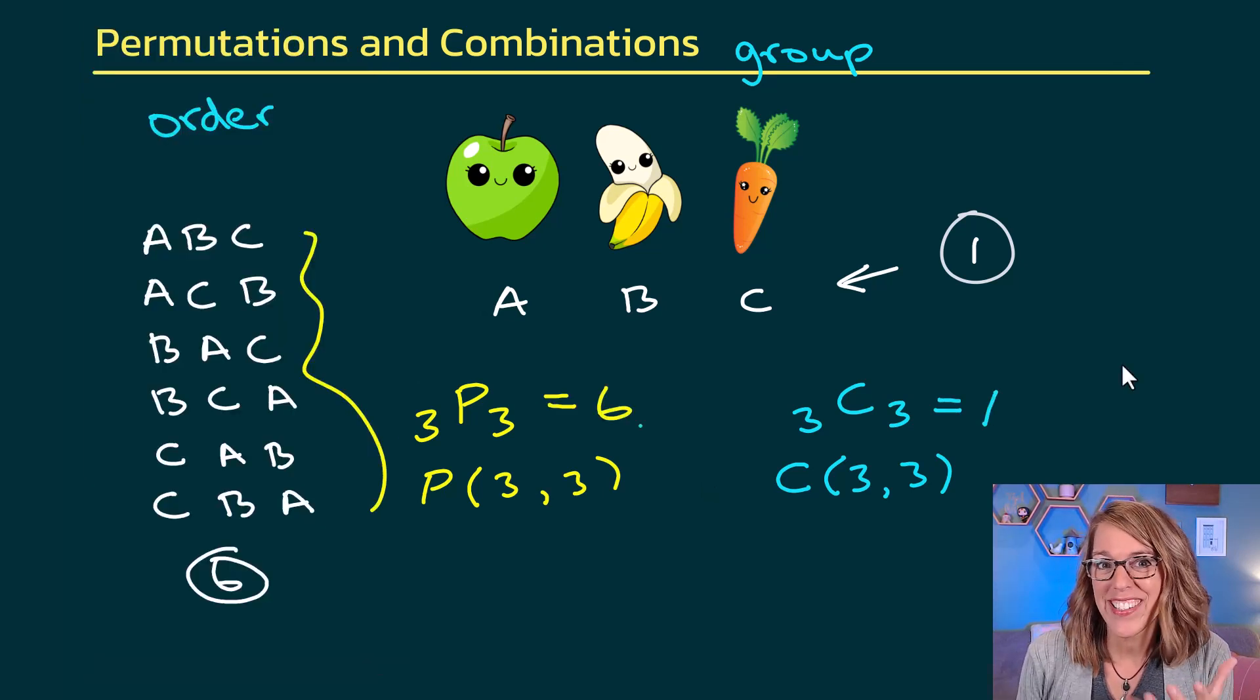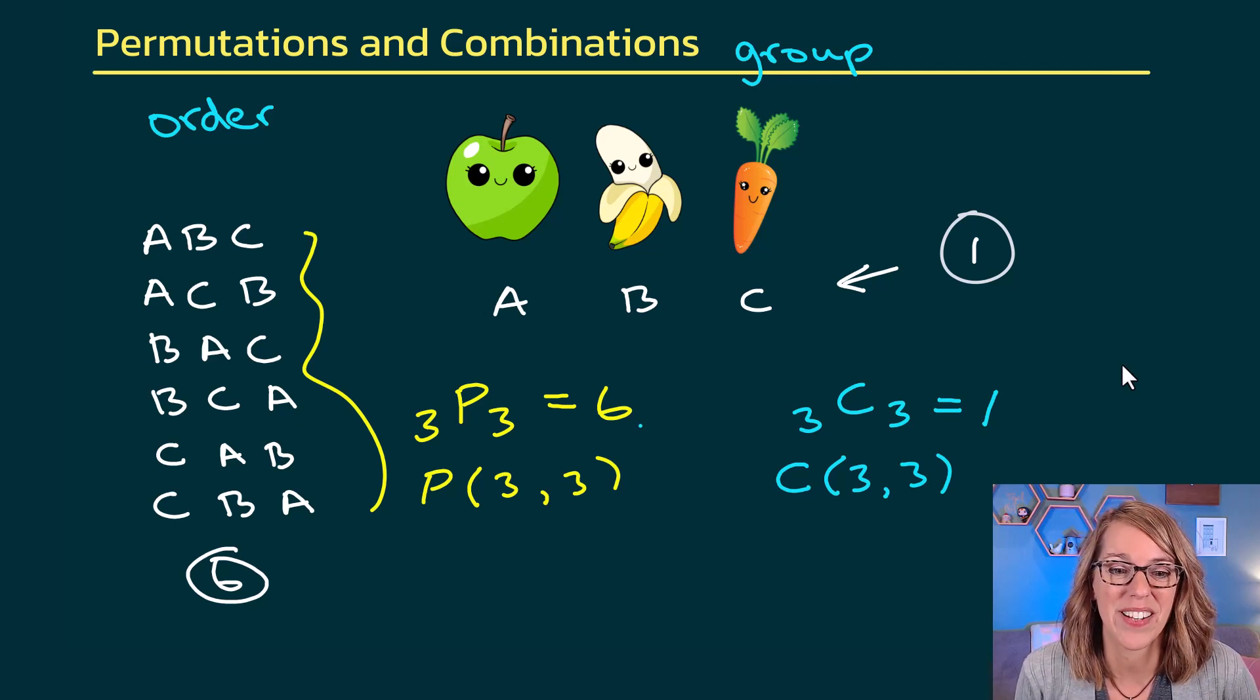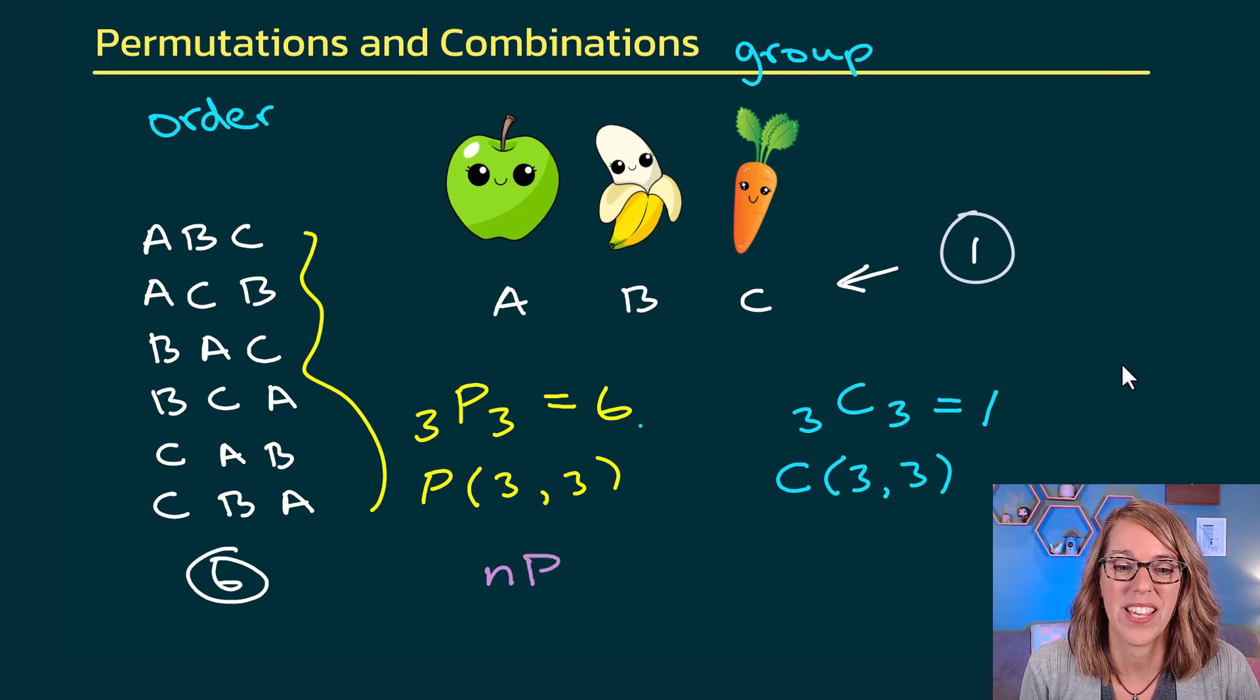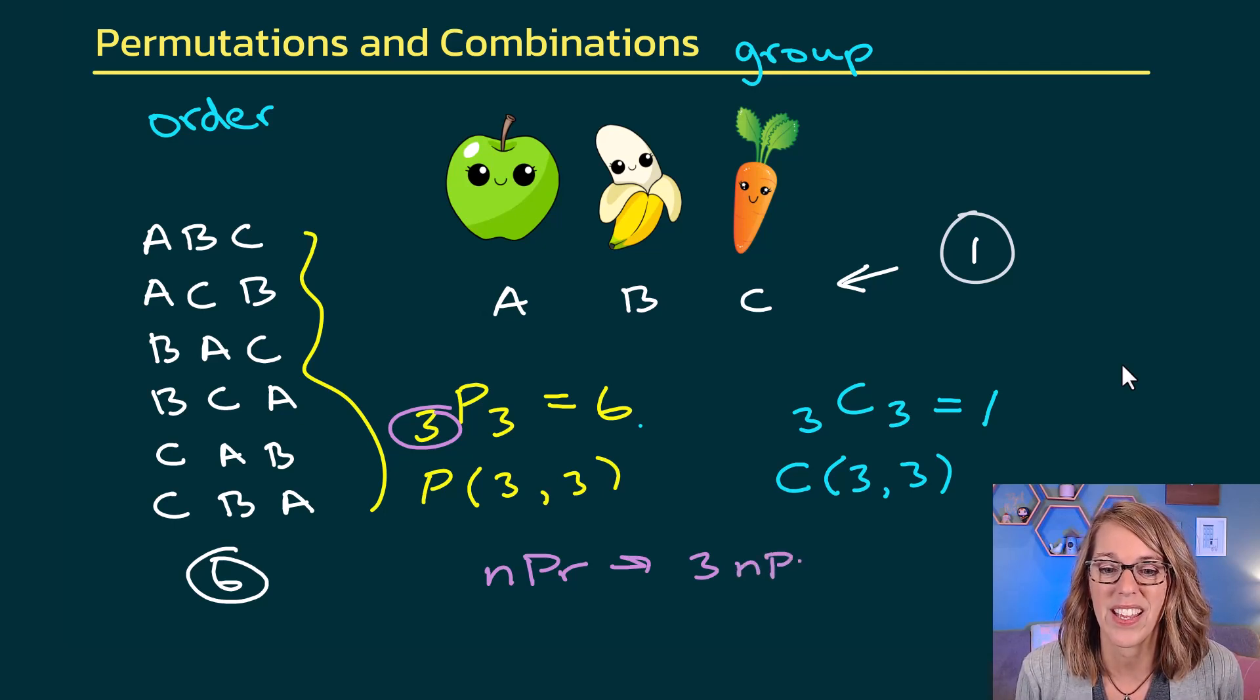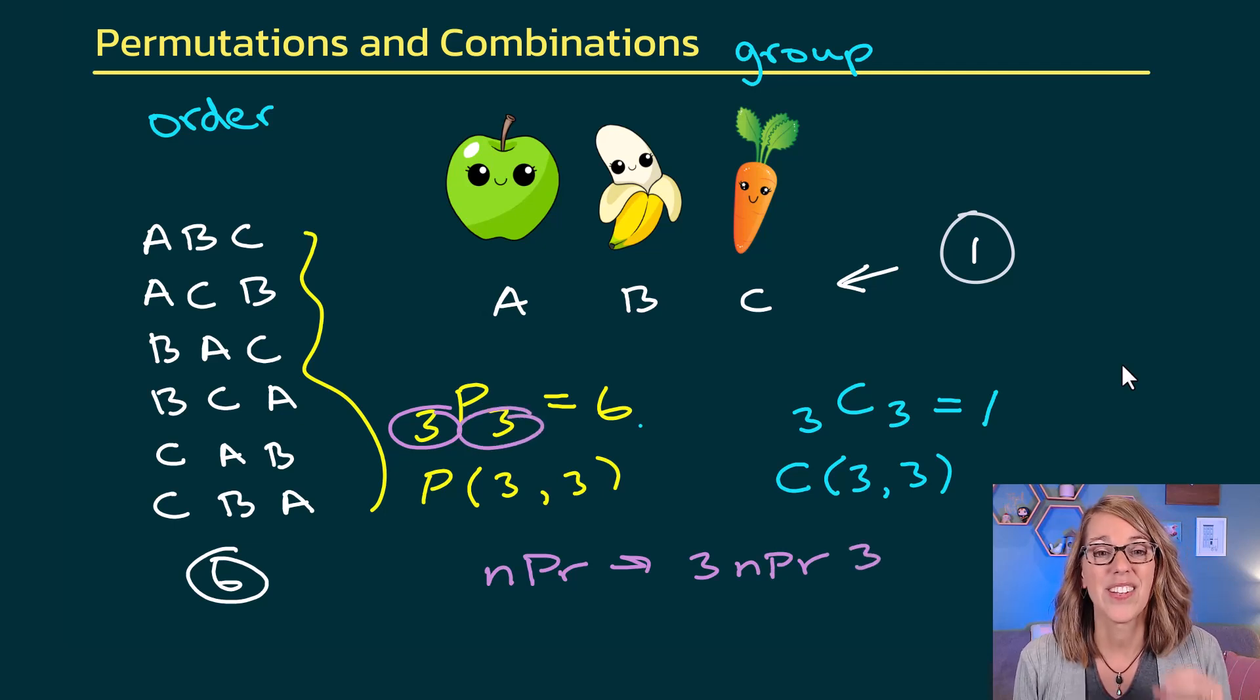If your calculator happened to look different than mine when you hit the NPR button, it may have just typed in NPR like this without those little boxes. If that's you, you want to start by typing in this number. So you're going to type the 3 first, then go to that math menu, grab the NPR, then you're going to type in that second number, and you'll come up with the same answer that we did.